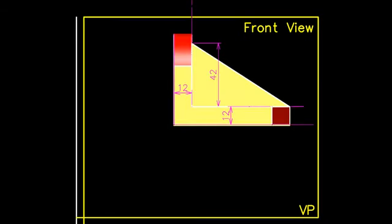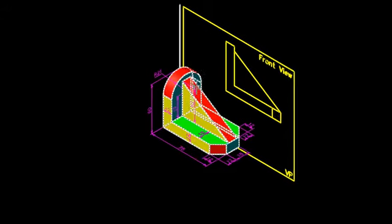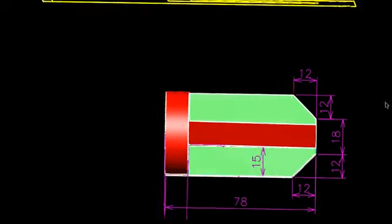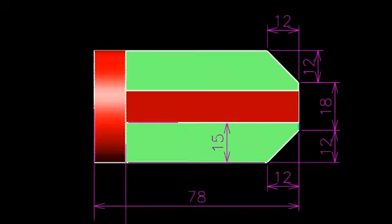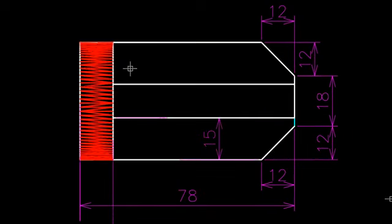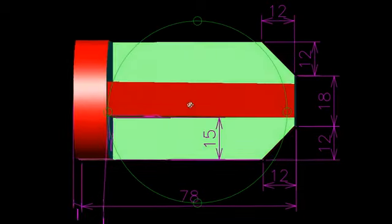Taking back our isometric view, we are now going to project the top view. When we make the top view of the same object, it is going to appear somewhat like this. In the shaded line diagram, whatever is appearing is the red face — the smooth face. A little rotation makes it clear how the different faces are getting hidden.